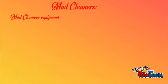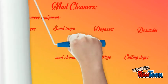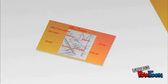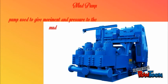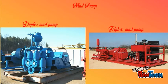Mud cleaners are equipment used to separate drilling mud from rock cuttings, solids and fluids added during the drilling operation. Mud cleaner equipment includes shale shaker, sand trap, degasser, desander, desilter, mud cleaner, centrifuge and cutting dryer. If using oil-based mud, the cutting dryer is used to recover the mud before dumping of cuttings. A mud pump is a reciprocating piston or plunger device designed to circulate drilling fluid under high pressure down the drill string and back up the annulus.